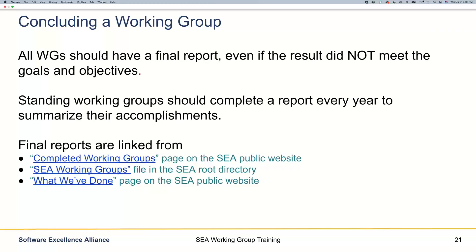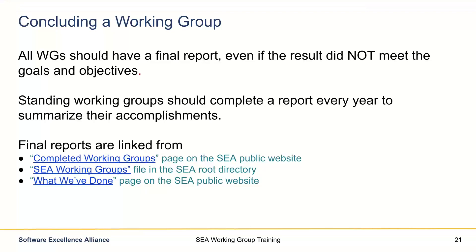There are a lot of working groups that have completed already. If you go to the completed working groups site on the public website, you can see all the working groups there. If you go to that C working groups file on the C root directory, that also has completed working groups. And if you go to the 'What We've Done' section, that's going to be updated by year and show links to all the working groups that completed that year. All the 2020 final reports are available right now on that site.